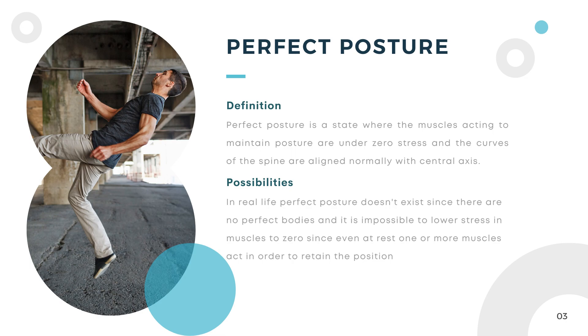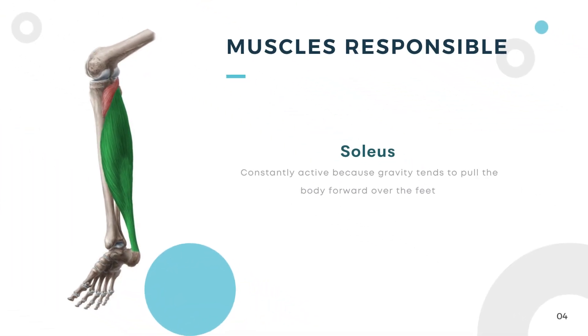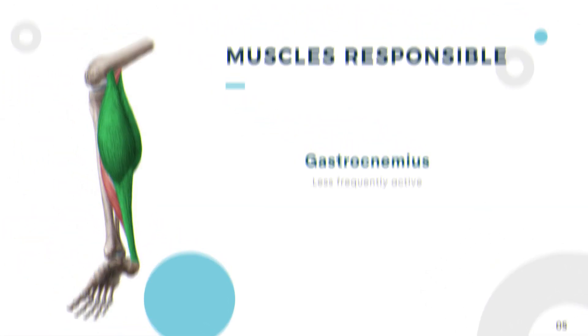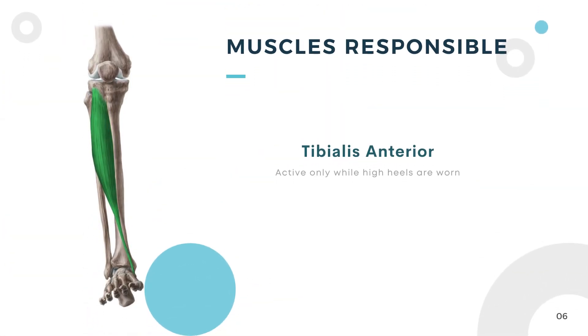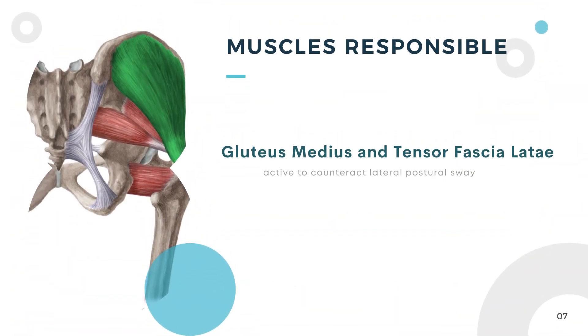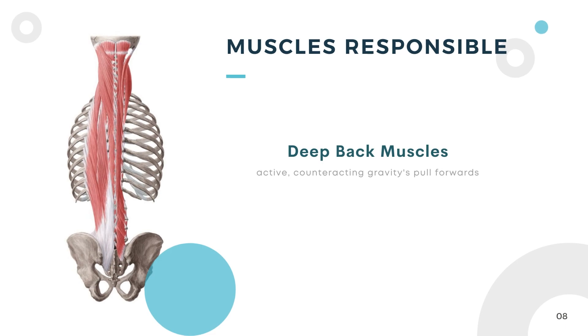In real life, perfect posture doesn't exist since there are no perfect bodies, and it is impossible to lower stress in muscles to zero, since even at rest one or more muscles act in order to retain the position. Muscles responsible to maintain posture are the soleus, gastrocnemius, tibialis anterior, gluteus medius, and deep back muscles.